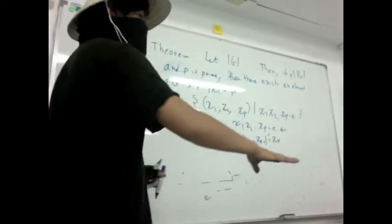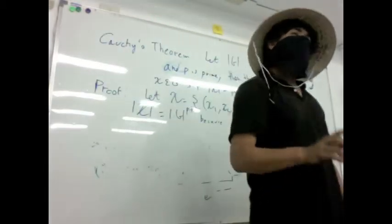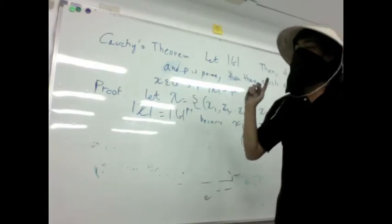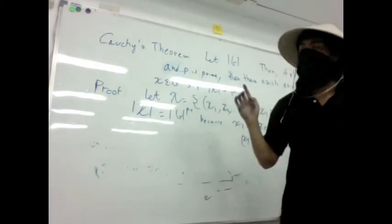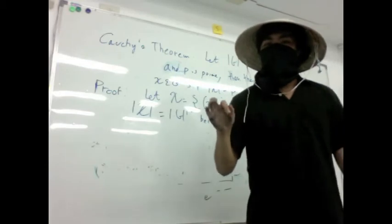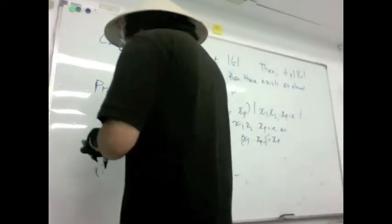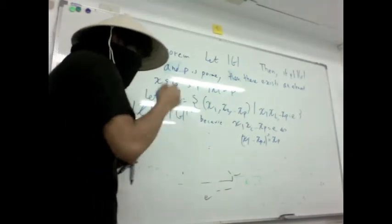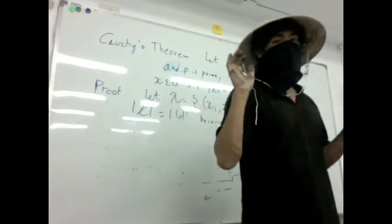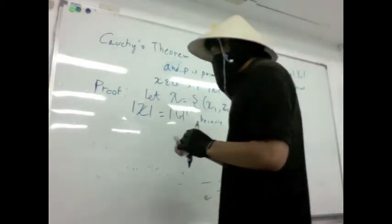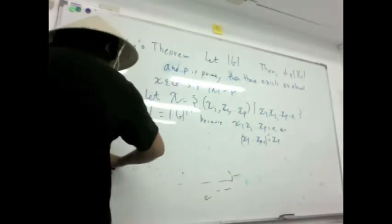Can each equivalence class contain exactly p elements, I mean, except p? So we know there's going to be one equivalence class where everything is equal to e, and that's going to be size 1. And can everything else have also, can everything else have size exactly p? So it looks like that, okay.